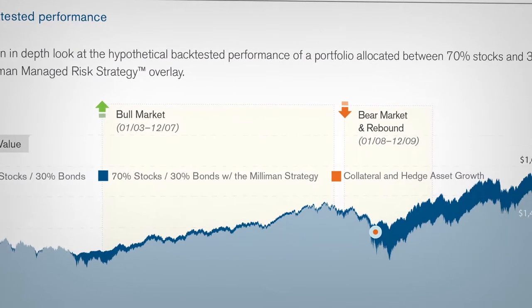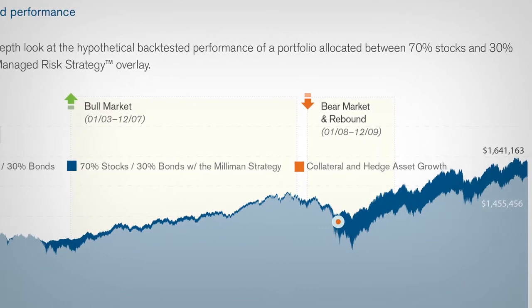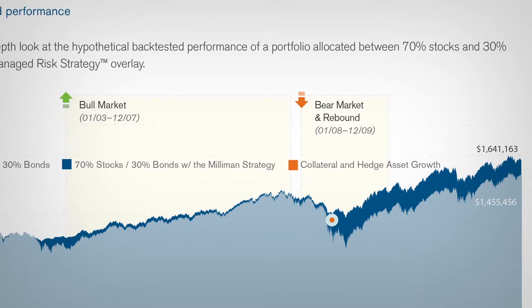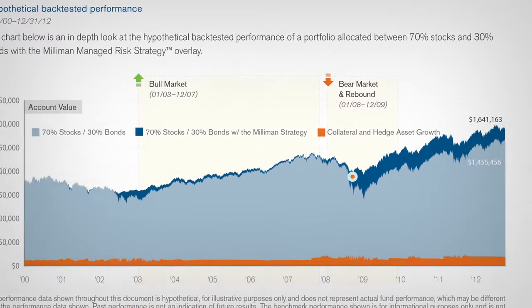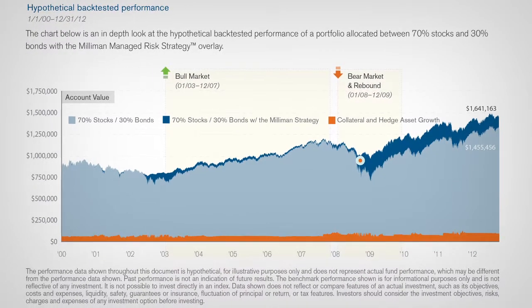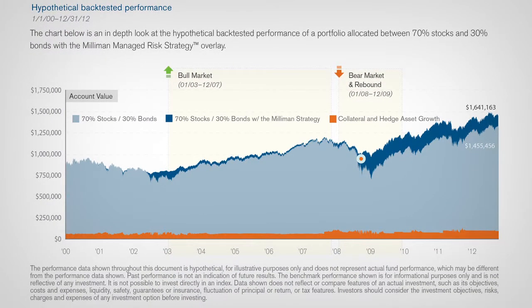Eliminating the downside risk becomes very important. And the Milliman strategy is geared to eliminate about 70% of the downside risk while keeping about 80% of the upside potential.